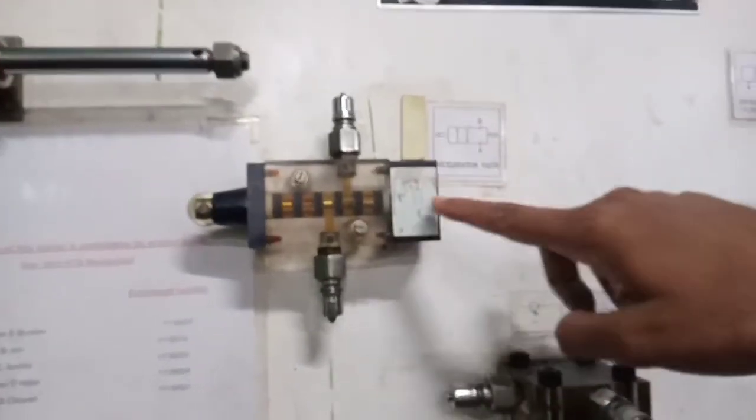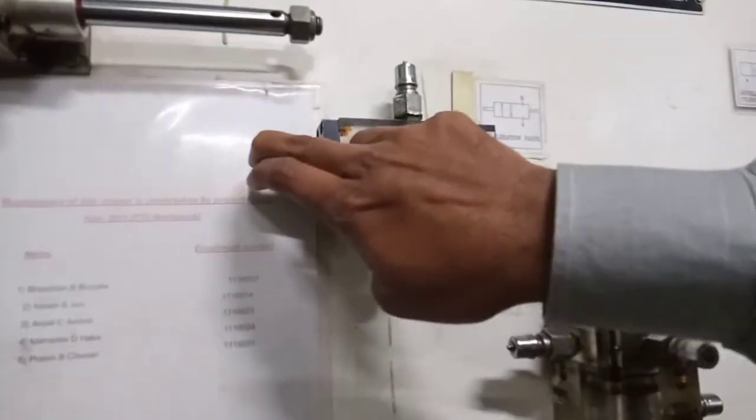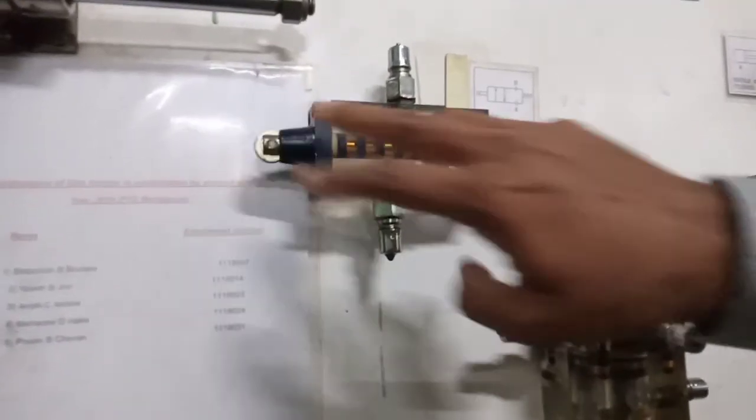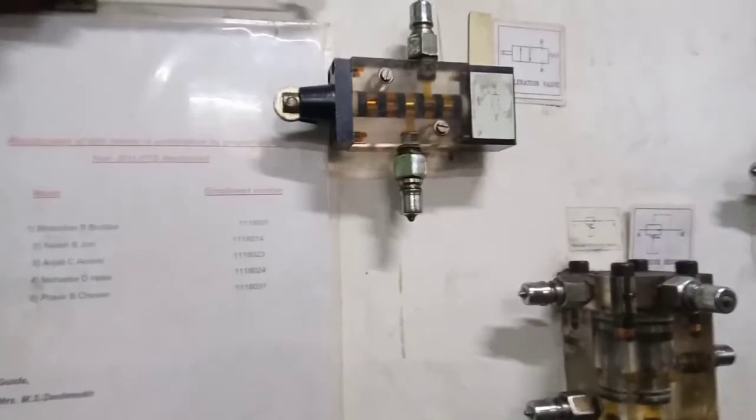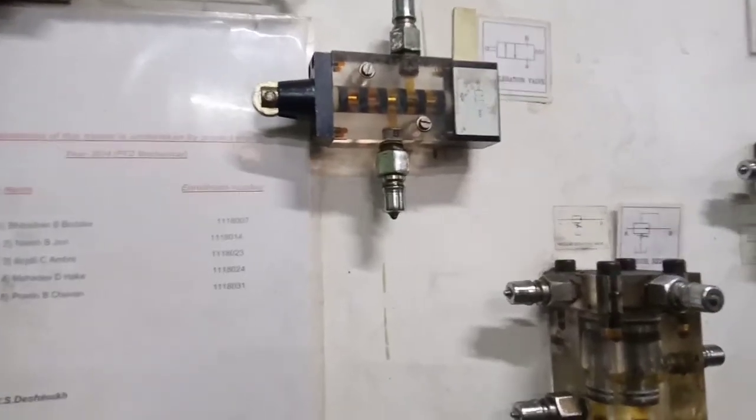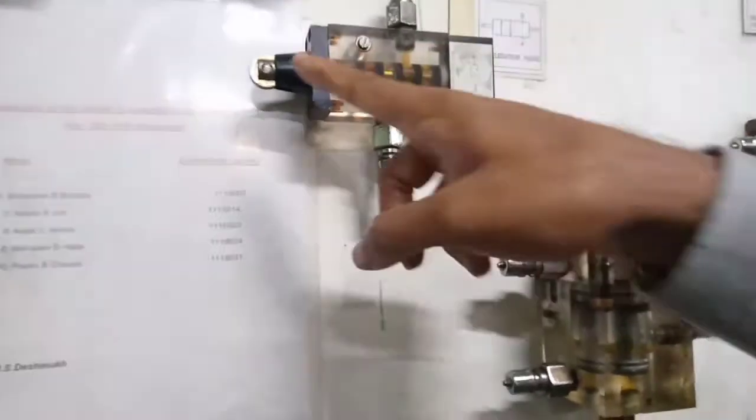Two positions and two ports. So, two by two. So, if something comes forward and presses this roller, then its position will change. So, we have seen the position dependent reversal of piston using roller operated DC valve. So, that roller DC valve is this.